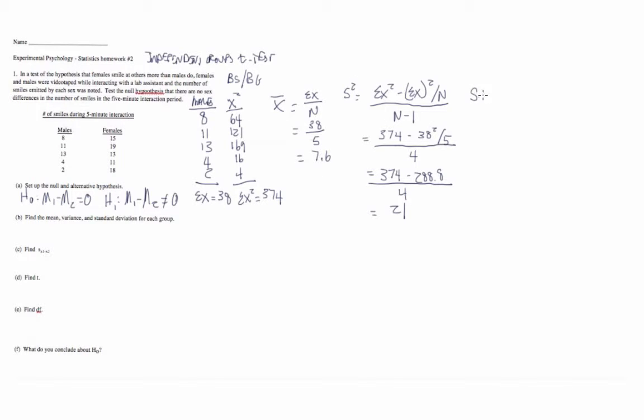We'll go to some intermediate steps, which gives us 21.3. And so then if we get our standard deviation, which is just the root of this, so it's 21.3 under our root sign. And that gives us our standard deviation of 4.62.